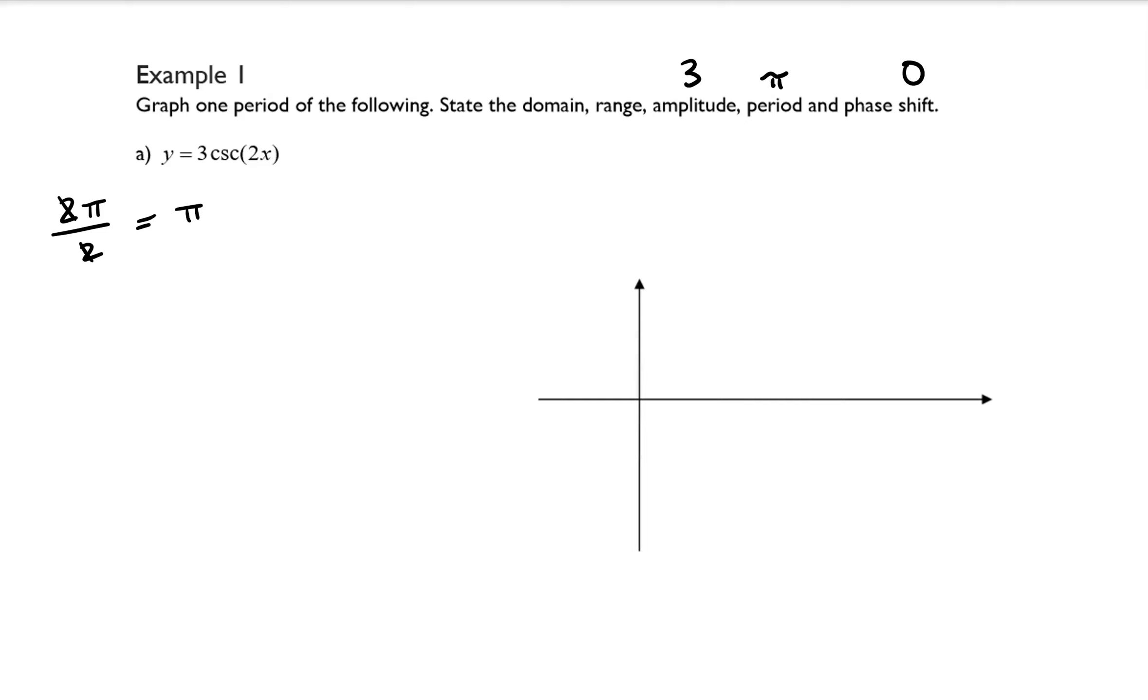And let's wait a moment before we figure out what the domain and the range are. So I'm going to label my y and x-axis. I know that my period is pi, so I will place pi there.